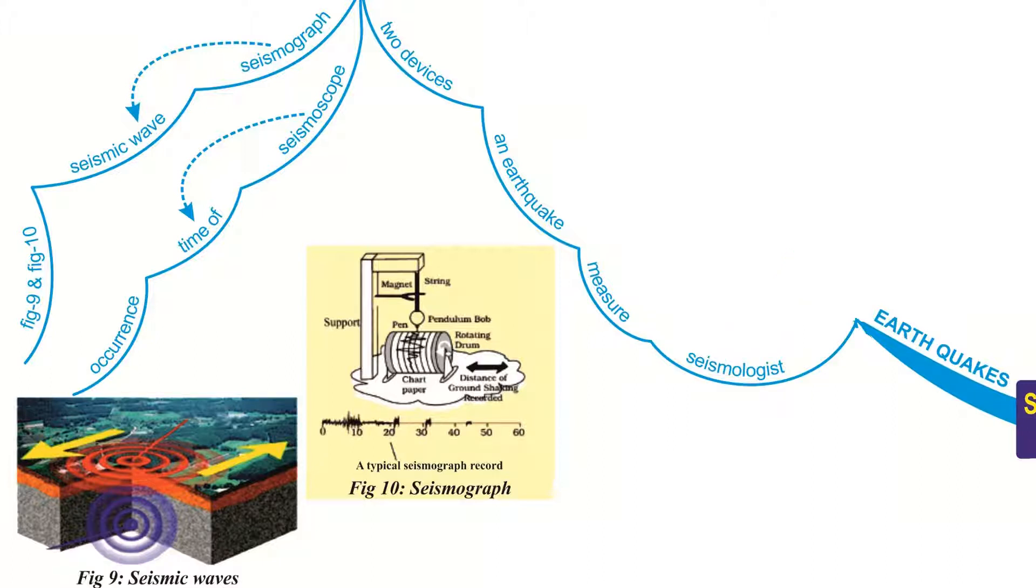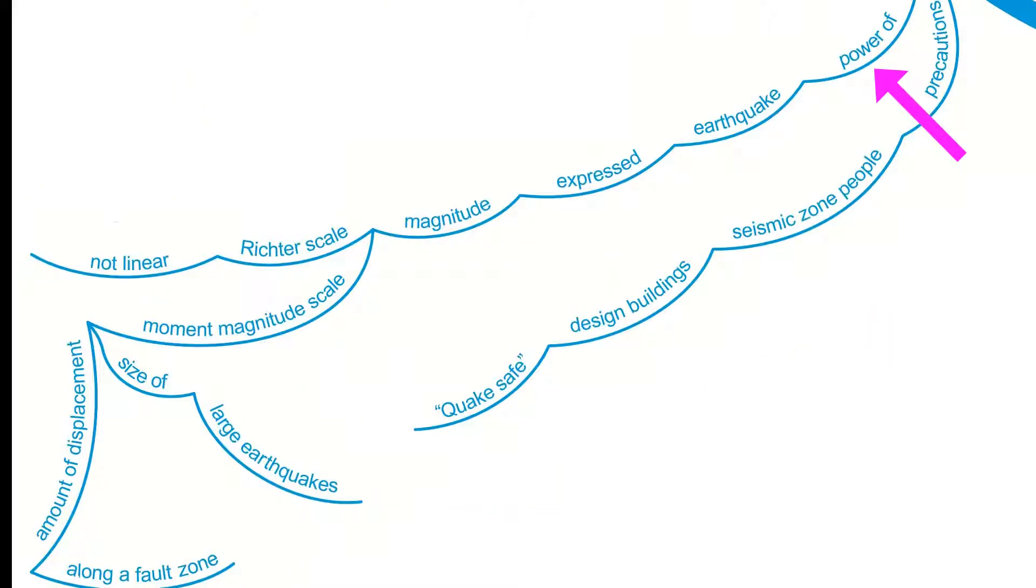Two devices are used: seismograph and seismoscope. The seismograph is used to measure the seismic waves, whereas the seismoscope is used to measure the time of occurrence of an earthquake.